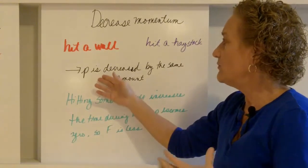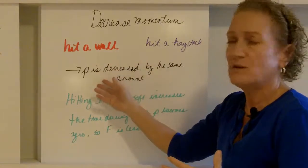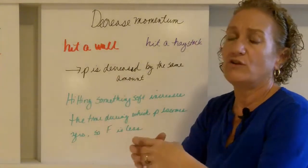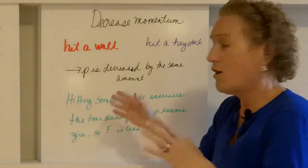When you're going to decrease, in both cases, you're going to decrease your momentum by the same amount. Your velocity is going to end up being zero. So your momentum is going to end up being zero. However, when you hit something, let's call it soft.